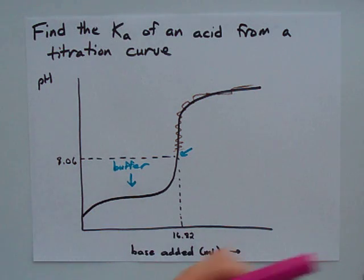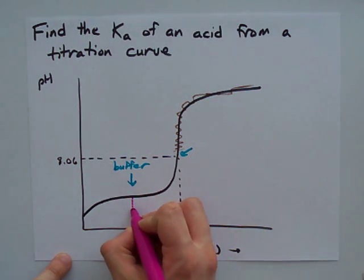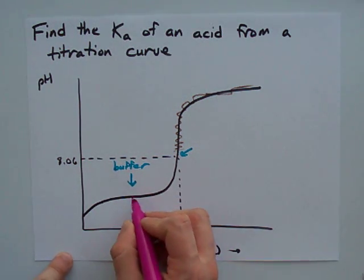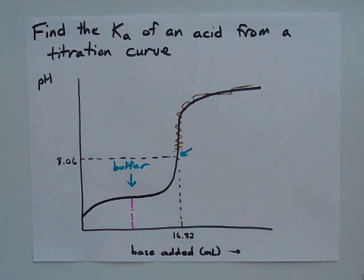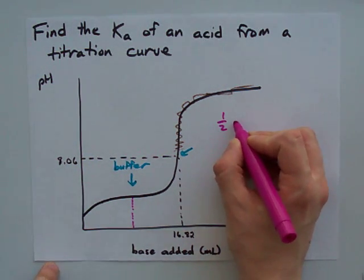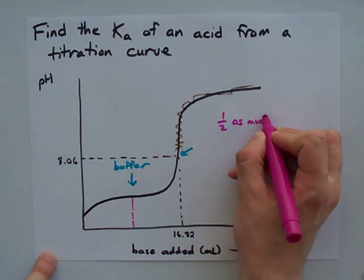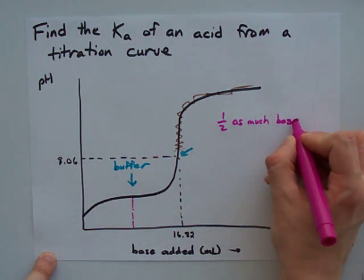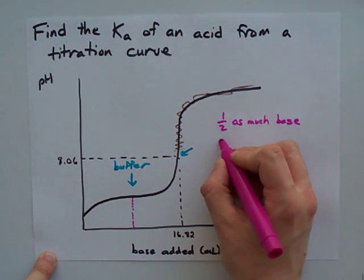Here's the point, though. The best place for the buffer region, or where the buffer is flattest, or the middle of the buffer region, is the point at which you've added half as much base as you started with of acid.